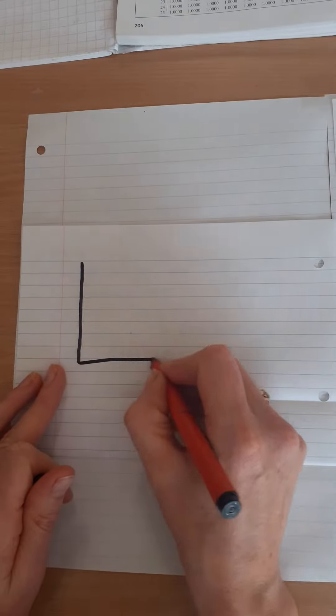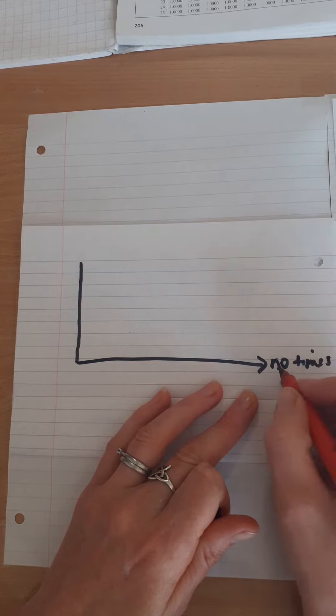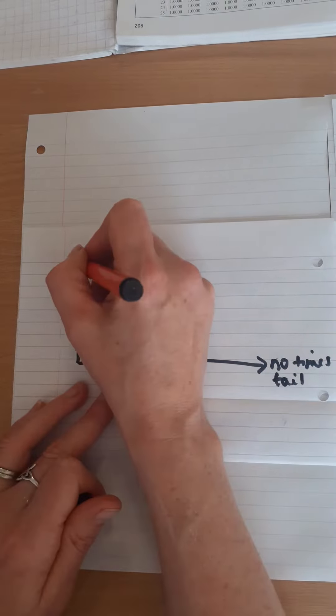Okay, if I have here the number of times you get a tail when you're tossing a coin, and this is the probability.